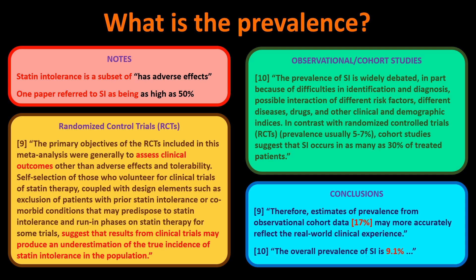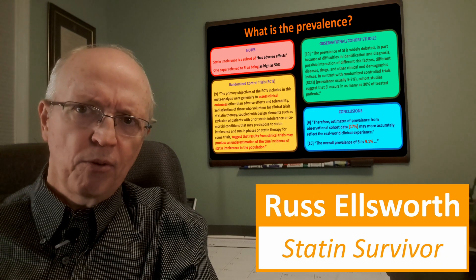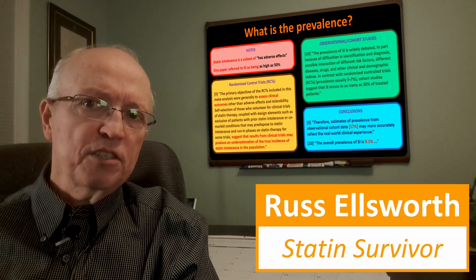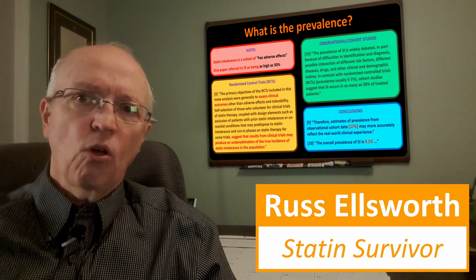Paper 10 was more specific. They outright stated the overall prevalence of statin intolerance is 9.1 percent. It's interesting how precise that number is — not 9.2, not 9.0, but 9.1 percent. There's false precision there, but we'll take that as the lower bound estimate.